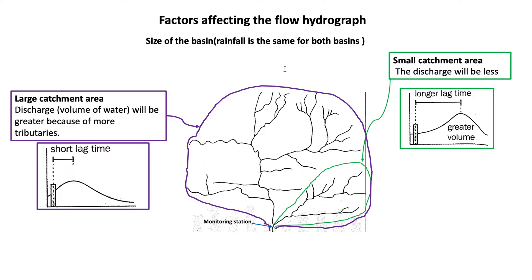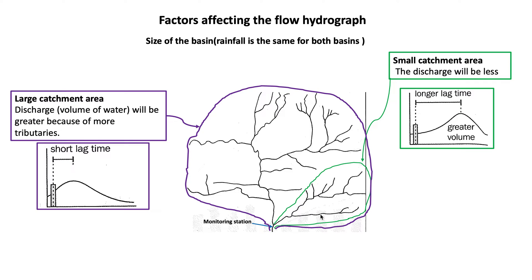Let's look at factors affecting the hydrograph, starting with the size of the basin, where rainfall is assumed the same for both basins. In a large catchment area, we have a shorter lag time and greater discharge because of a larger number of tributaries. In a small catchment area, the discharge will be less, resulting in a longer lag time, because there are fewer tributaries.